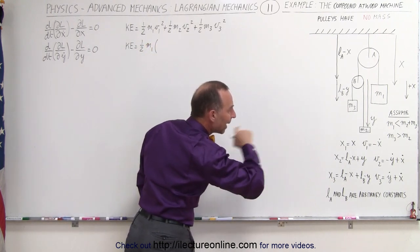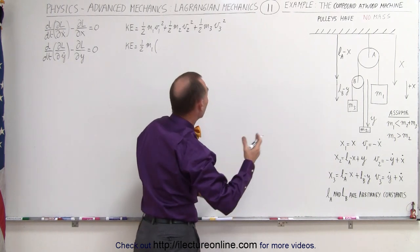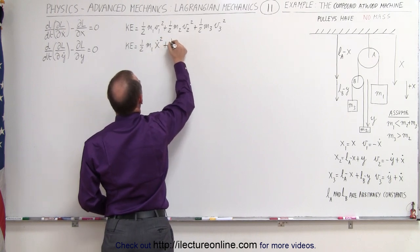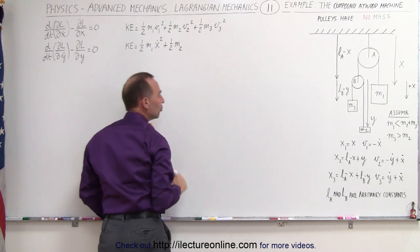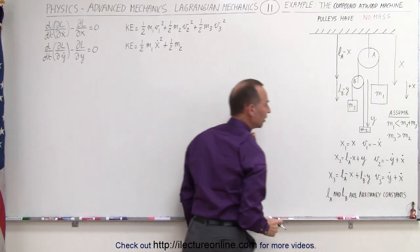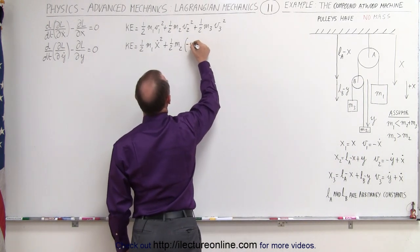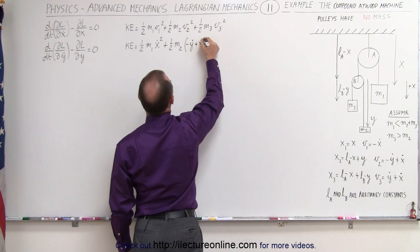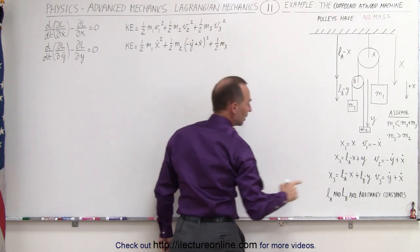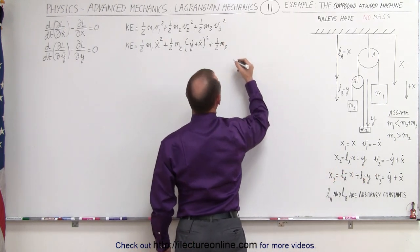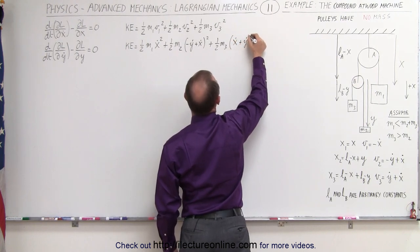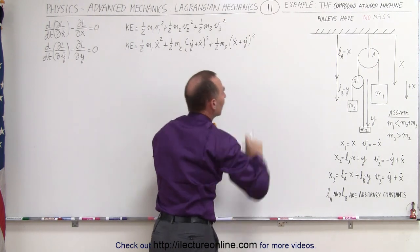Substituting the velocities: T = one-half M1 x-dot² + one-half M2 (x-dot minus y-dot)² + one-half M3 (x-dot plus y-dot)². Since squaring removes the negative sign in V1, we simply write x-dot squared for that term. So now we have the full kinetic energy of the system.